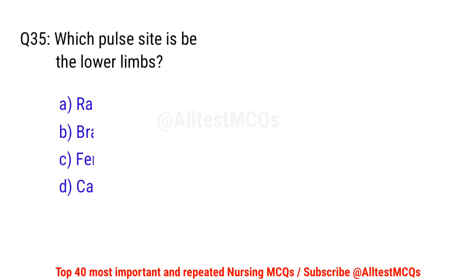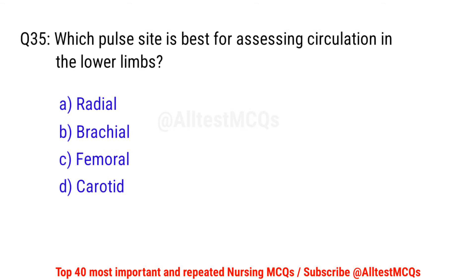Question No. 35: Which pulse site is best for assessing circulation in the lower limbs? The right option is C: Femoral.